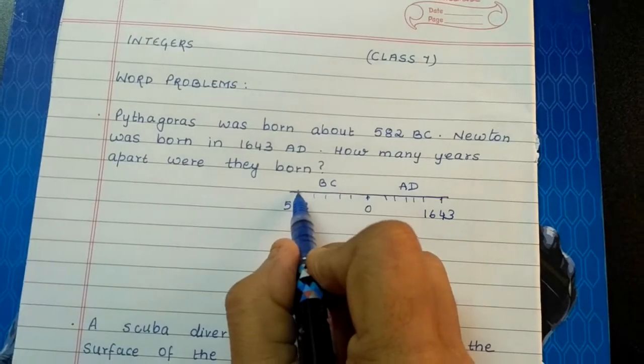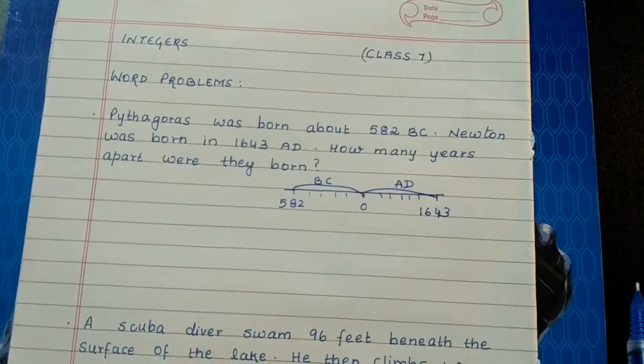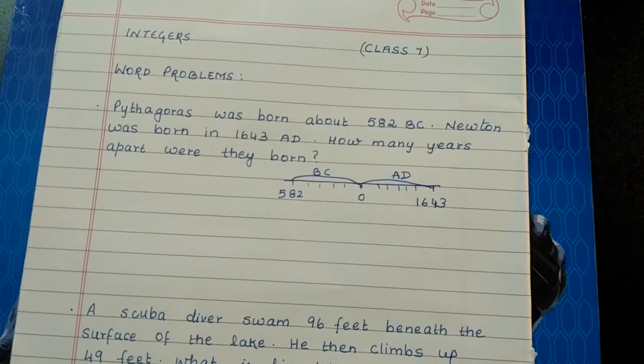How many years were they apart? From here to here 582, and from here to here 1643 years, we have to add them. But how will we show this in integers?